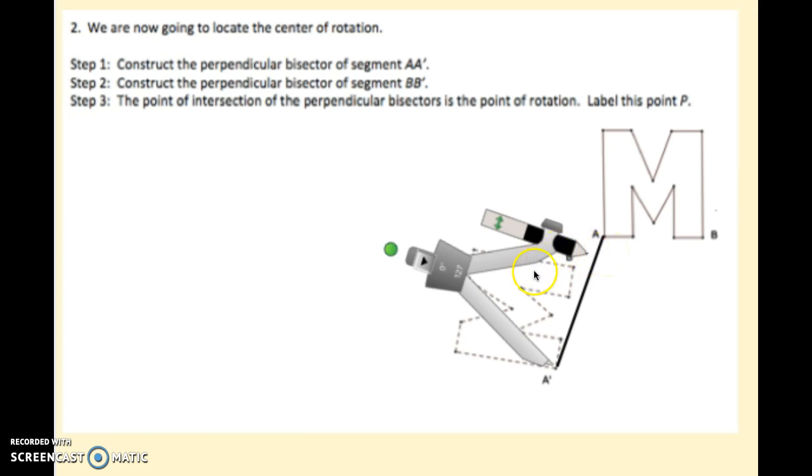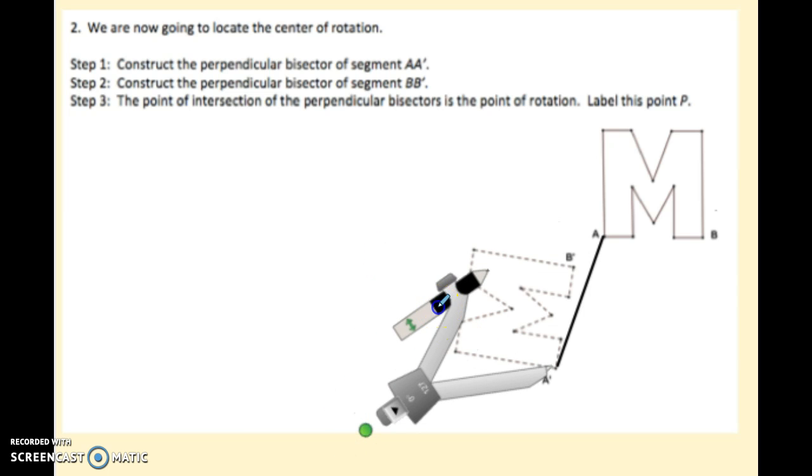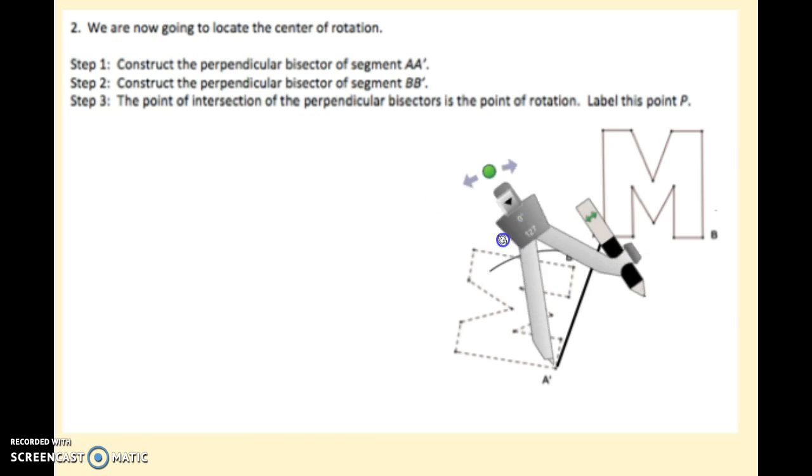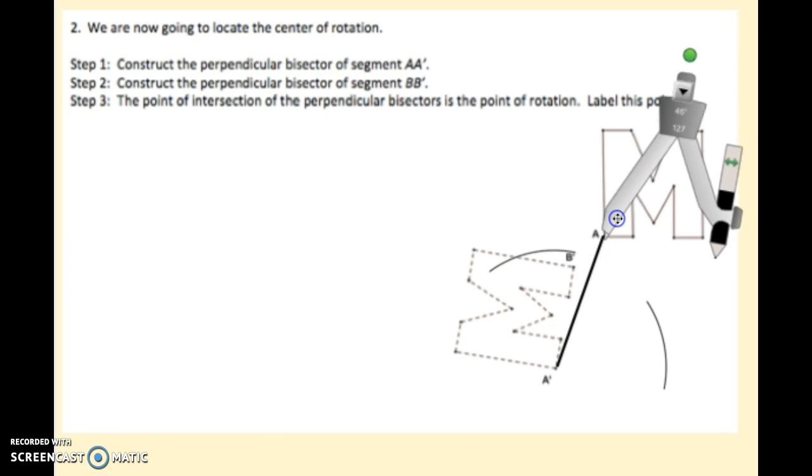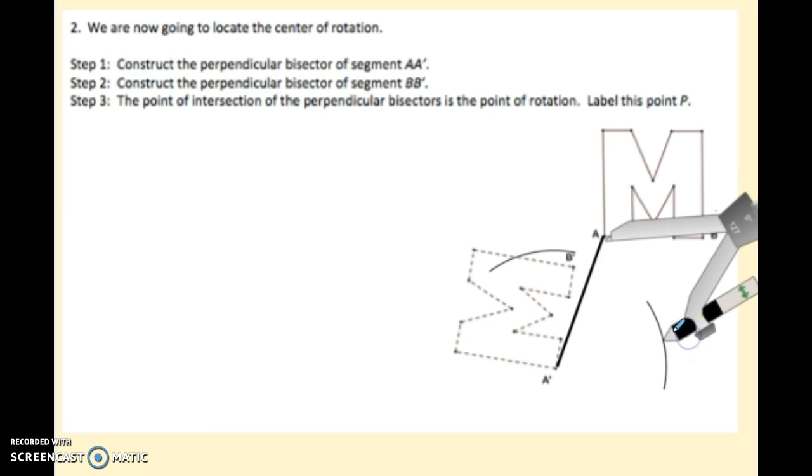Just a quick reminder to bisect: open your compass up more than half the length of the segment. Then from one endpoint, swing an arc above the segment. Keeping it the same distance, swing an arc below the segment. We're going to move our compass to the other endpoint of our segment and do the same thing.